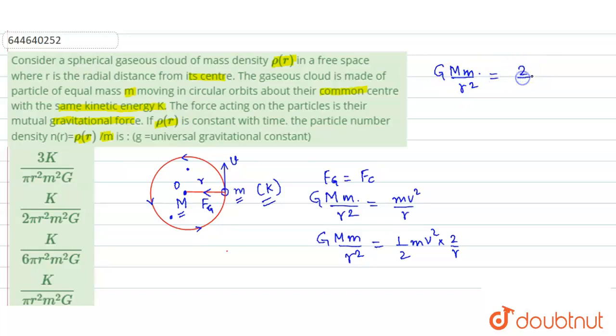Now we can cancel out the r and we can find out the mass as a function of r. So this will be M equals 2k divided by G times small m times r. You can see that this is obvious: more the radial distance from the center, more will be the mass that is inside the gaseous cloud.